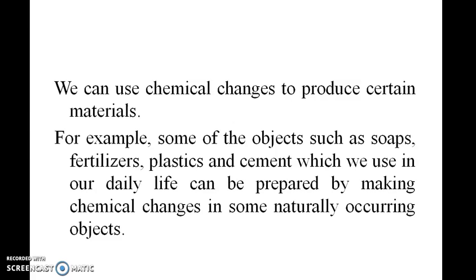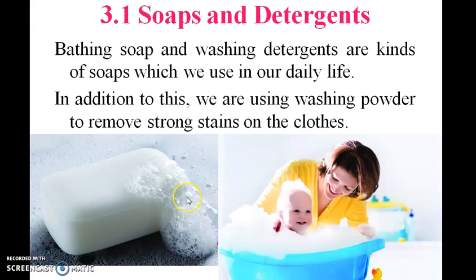We can use chemical change to produce certain materials. For example, some objects such as soap, fertilizer, plastics, and cement which we use in our daily life can be prepared by making chemical changes. So first, we are going to see soaps and detergents.